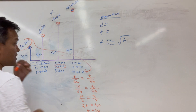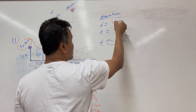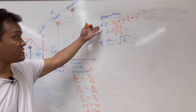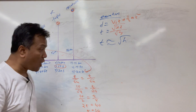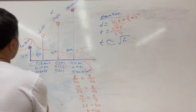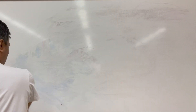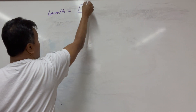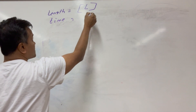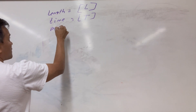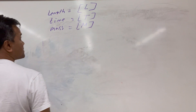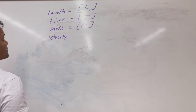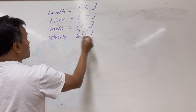Now we are going to do dimensional analysis. These results allowed Sir Isaac Newton to write equations like v·t plus one-half·a·t² and the square root of 2d over g. These equations were possible because of dimensional analysis. The dimension for length is L, dimension for time is T, dimension for mass is M. Dimension for velocity is distance over time — so length over time.